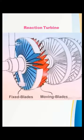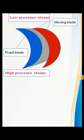In a reaction turbine, high pressure steam coming from the boiler is passed directly through the fixed and moving blades instead of a nozzle. The blades are designed such that the steam flowing between the fixed and moving blades is subjected to a nozzle effect.